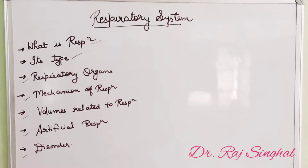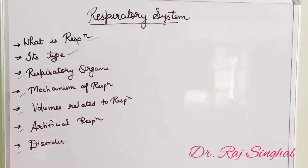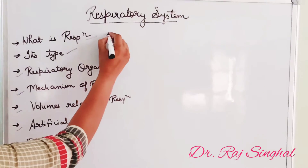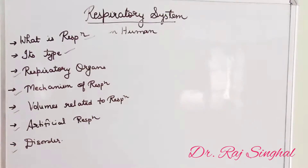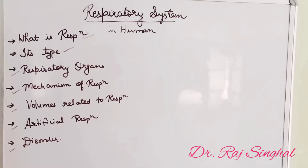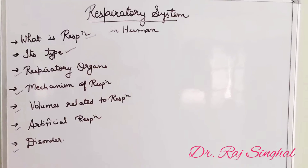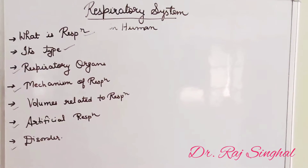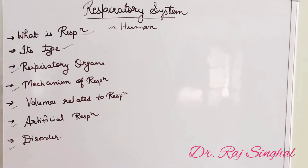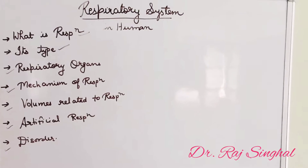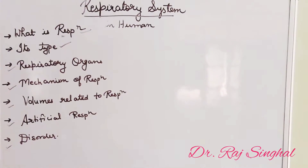Good morning students. Coming to the next chapter, we will be studying about the respiratory system in humans. As you all know, energy is needed for all living beings to perform various vital activities. This energy is obtained from the oxidation of food material. For the oxidation of food material, an important process occurs in our body — that is respiration.